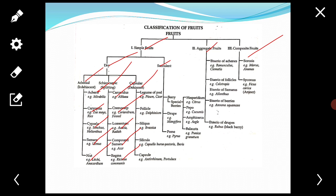Next is lomentum. The mature fruit is constricted. It splits off transversely into single seeded indehiscent mericarps. Example: Acacia, radish.